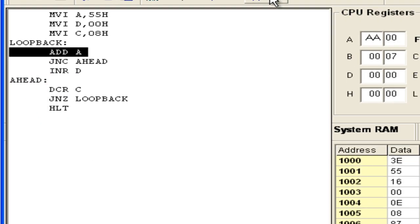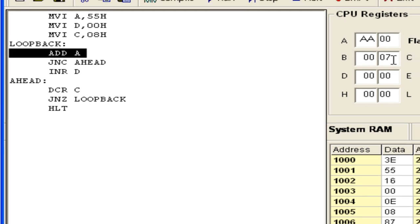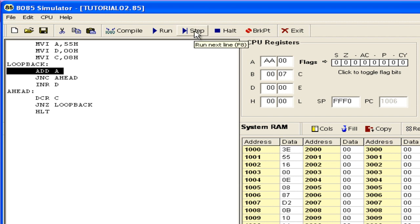The 0 flag is once again 0 and therefore jump if not 0 to loop back. So you can see that in the first iteration, the value of A is multiplied by 2. It was 55, it has become AA. The value of D has not changed since the MSB was 0. And the value of C has become 7 because it has reduced the bits counter.